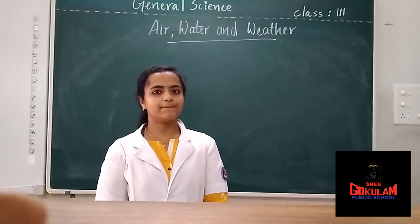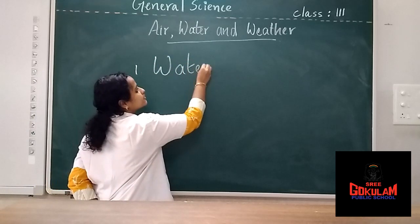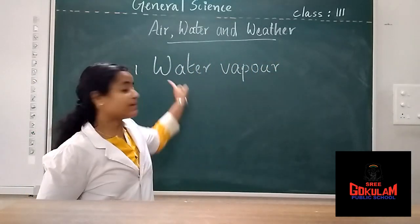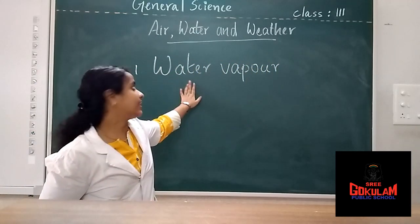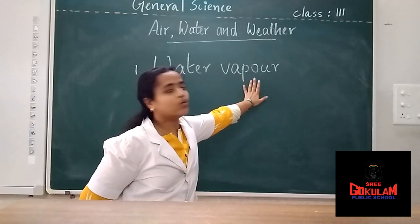Now we are going to discuss other components present in air. The first component is water vapor. Do you know what is water vapor? Water vapor are tiny droplets of water that is present in the air. It is called water vapor. The spelling of water vapor is W-A-T-E-R V-A-P-O-U-R.